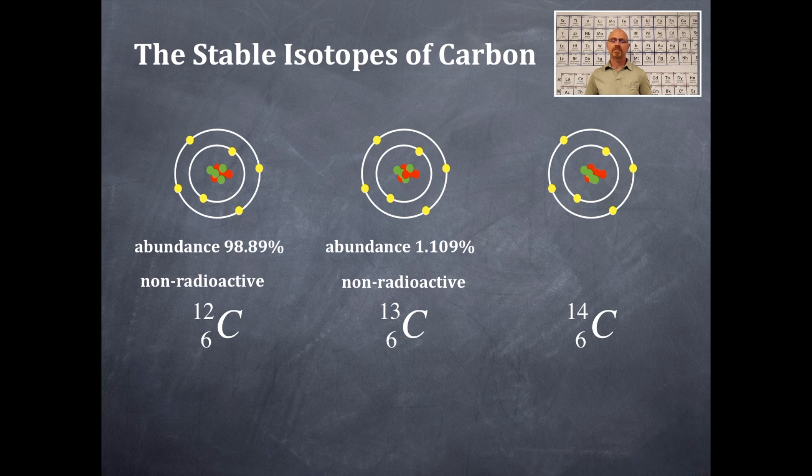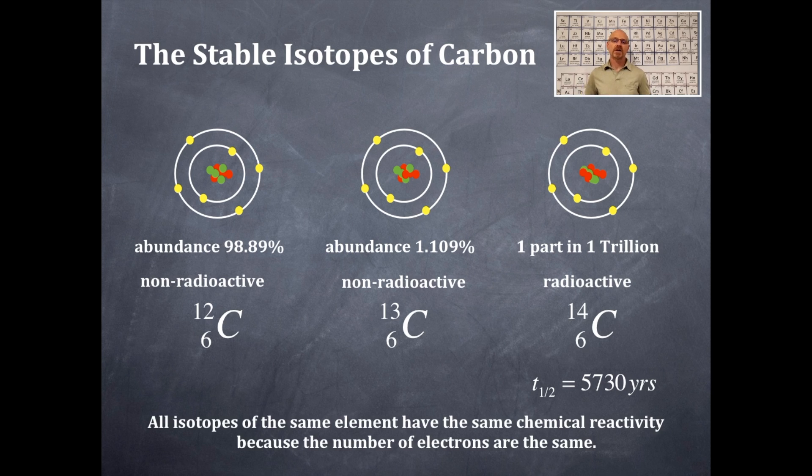The number of neutrons in the nucleus differs between six, seven, and eight, respectively, in carbon-12, 13, and 14. So this isotope is very small in percentage. It is only one part in one trillion. This is the only of the three naturally occurring isotopes that is radioactive. Its half-life is 5,730 years. We'll talk about half-lives another time.